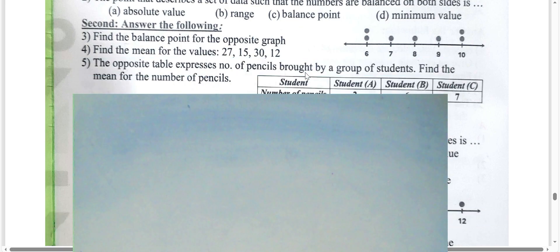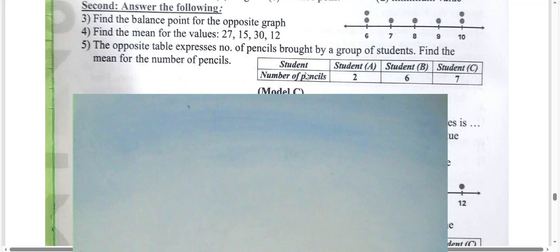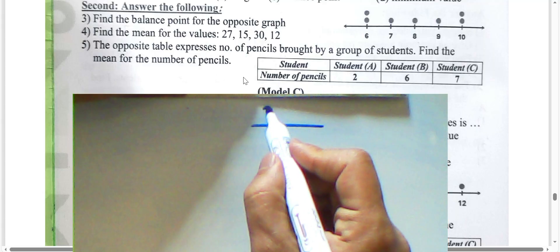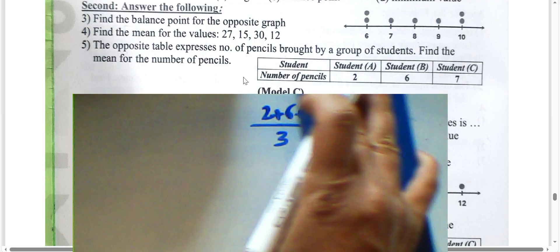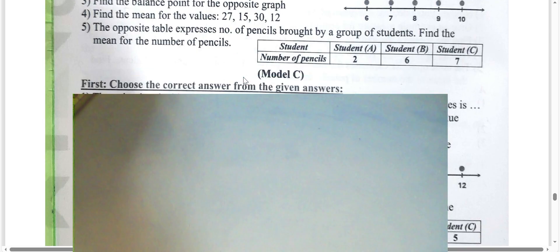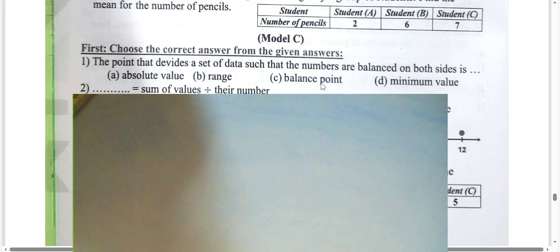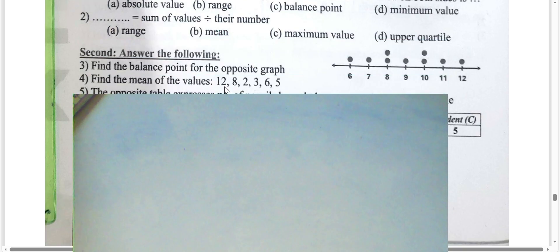Next question: a table expresses the number of pencils. Collect the values and divide by the number of sets — we have three sets: eight plus seven is fifteen, fifteen divided by three is five. The balance point of the graph is nine, which is a symmetrical data set. Find the mean by collecting all values: twelve plus eight is twenty, plus two is twenty-two, plus three is twenty-five, plus six is thirty-one, plus five is thirty-six. Thirty-six divided by six equals six.